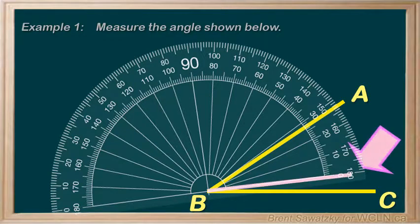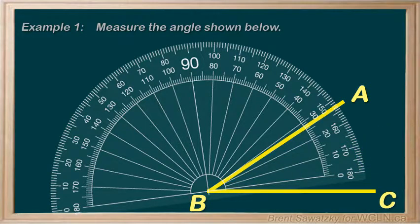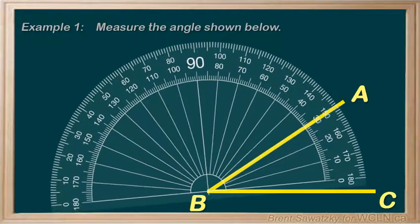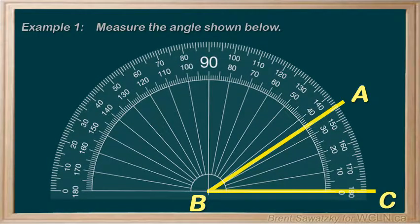The next step is to line up our zero line with one of the sides of our angle, BC in this case. Make sure we keep the midpoint on the vertex, and we're all lined up, and it's time to measure.